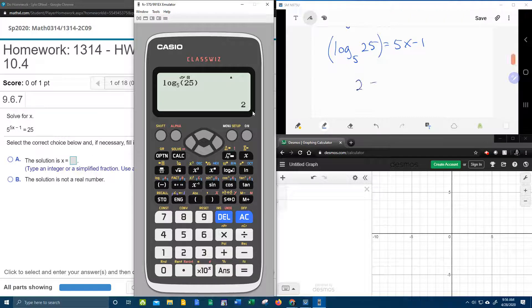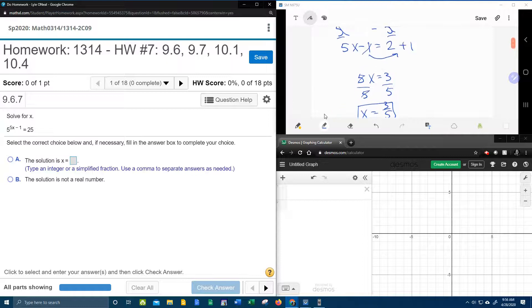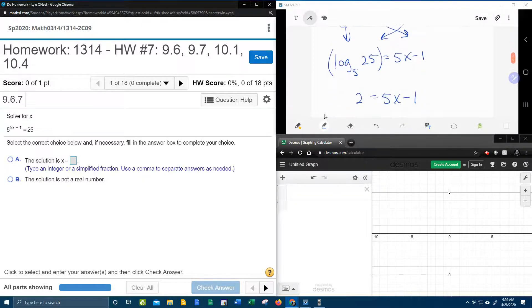So that says 2 equals 5x minus 1. And I don't know if you noticed, but we're at the same point that we were at right here, where we had the 5x minus 1 equals 2. So again, we're going to finish that.